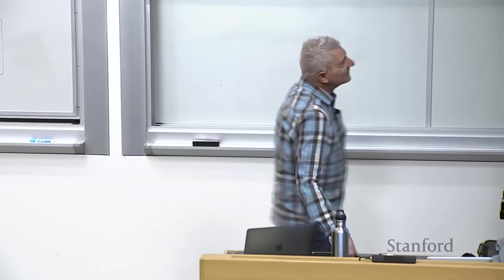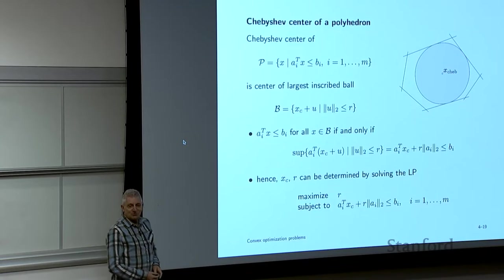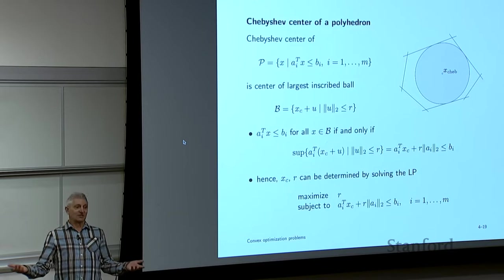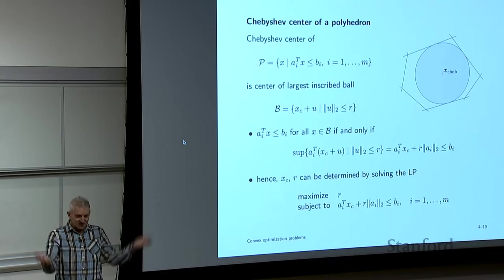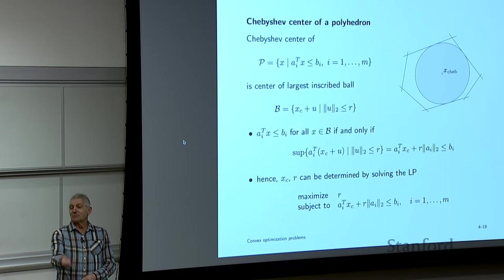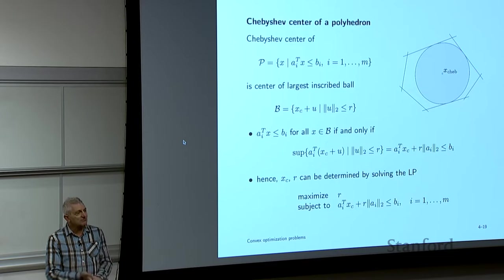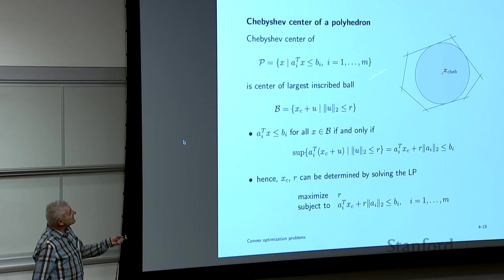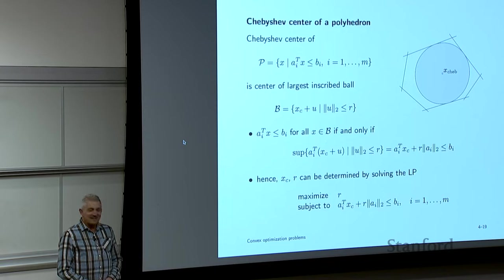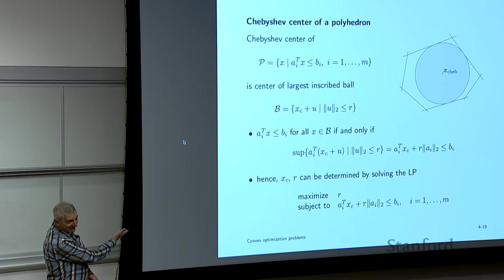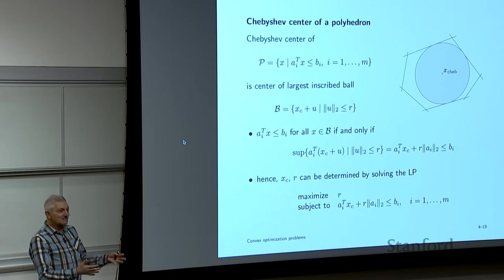When you see a ball and a two-norm, you'd think there's no way this ends up as an LP. And it is a little surprising that it does. So let's see how to find the largest ball fitting inside a polyhedron.